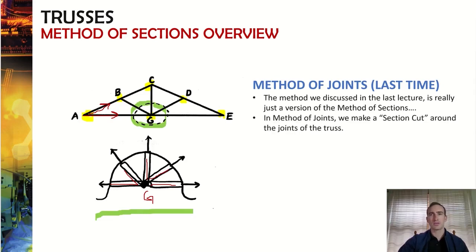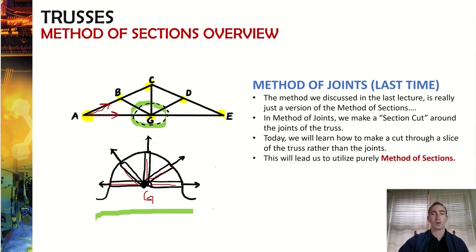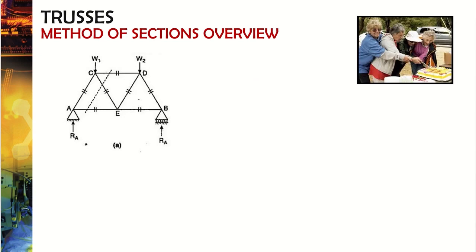What's going to be different this time is that instead of making a section cut around a single joint like joint G, we're going to learn how to cut through a slice of the entire truss and analyze things by looking either to the left or to the right. This is specifically the method of sections.